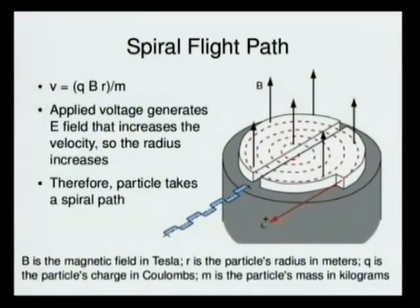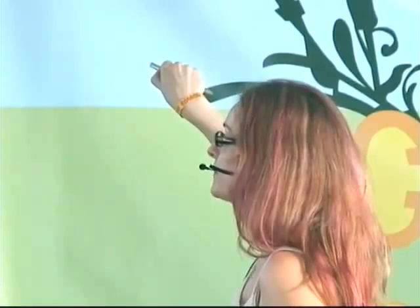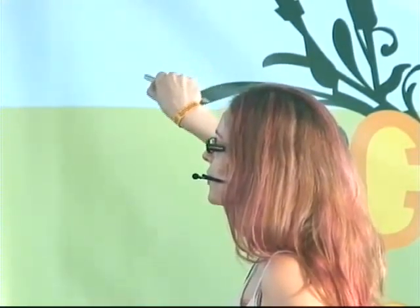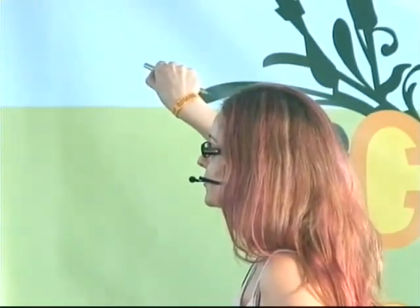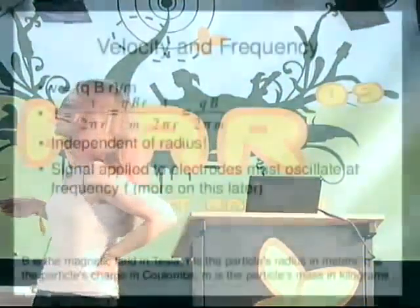Because the frequency is independent of radius, when the particles are out near the edge they're moving a lot faster than they are near the center. But it's timed correctly so that for all of the particles you can switch at that same frequency given by that equation. The signal you apply to the two electrodes has to oscillate at that frequency f.